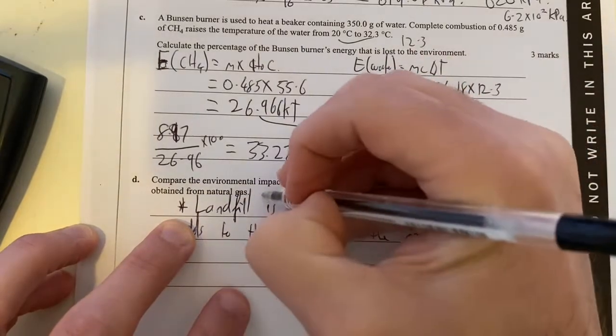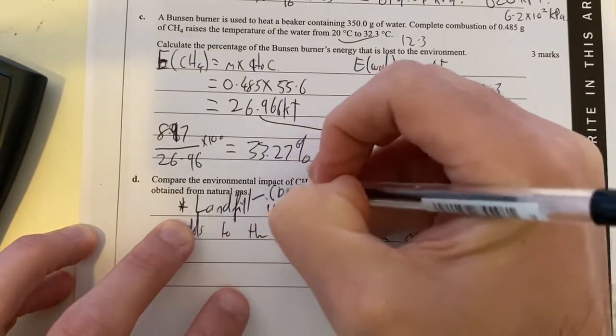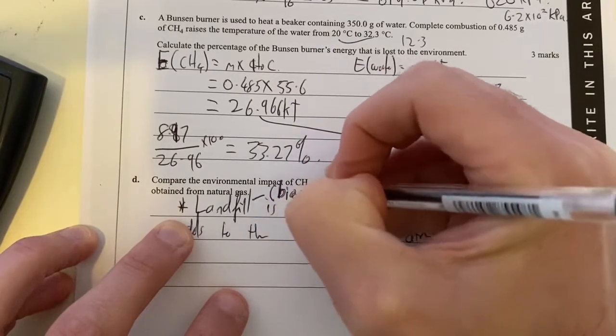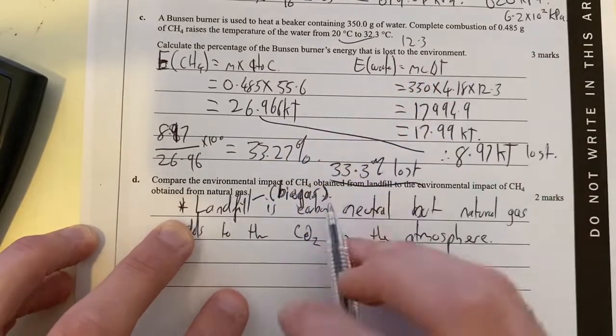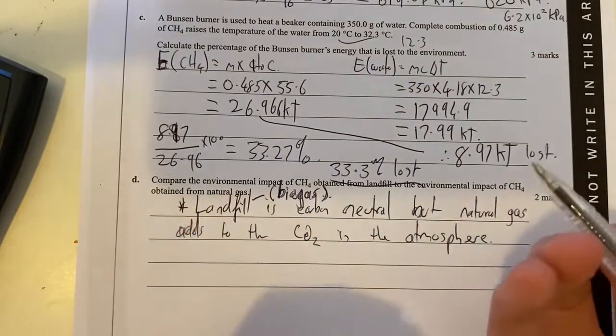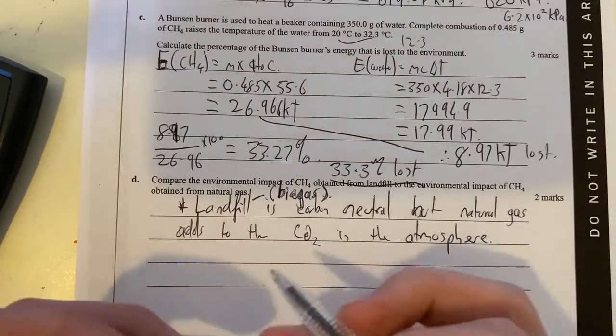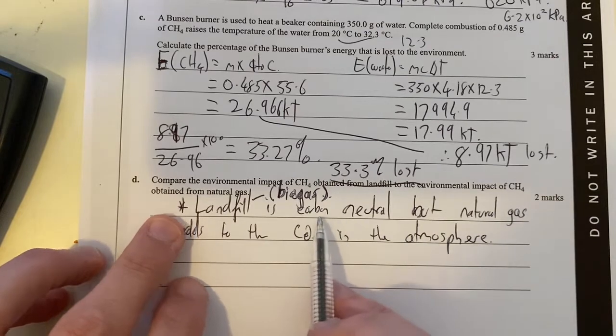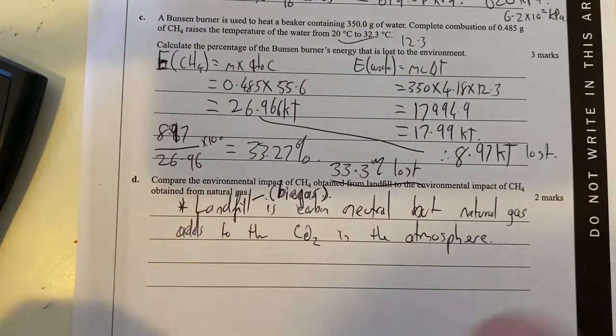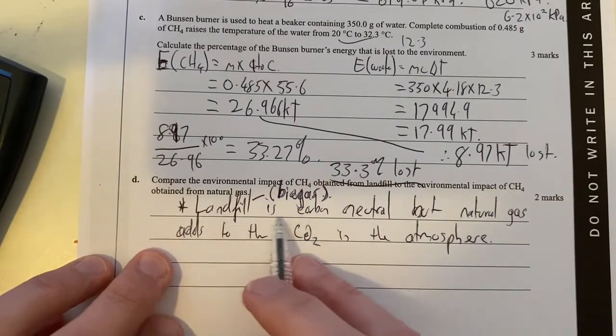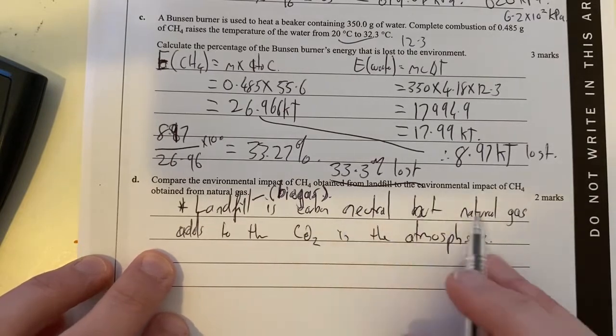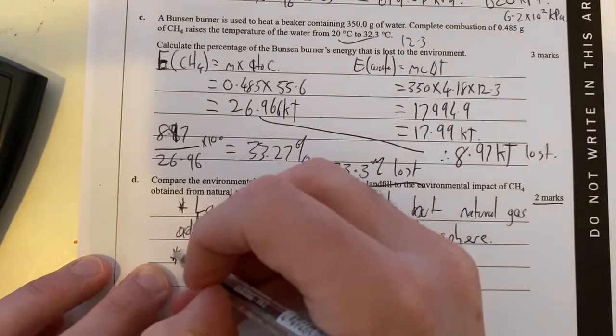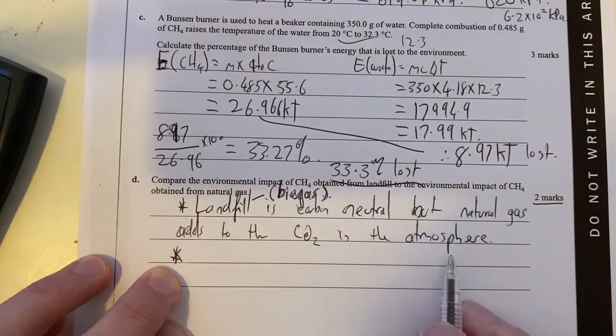So natural gas, so landfill, which is biogas, I'll write that down here as well, so biogas, that's considered carbon neutral, you should know that straight away, it's a biofuel. So we assume that the amount of carbon that's produced when we burn it is equal to the amount that was initially taken in when we grew all the stuff there. So basically, we're just not adding to the carbon dioxide in the atmosphere, but natural gas is. We're worth two marks over here, so I need to add another one there, another dot point. What else is a problem?